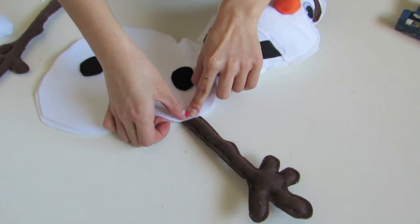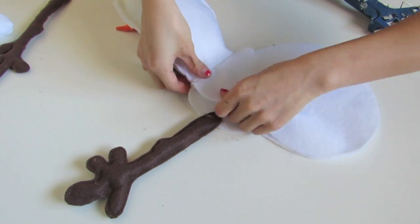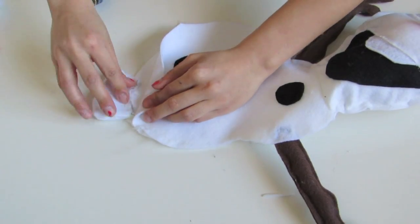And then we're going to be gluing on the arms. You just want to do kind of the same thing that you did for the hair piece. So just glue on one side and then flip it over and then glue on the other side. And then you want to kind of close up that part.